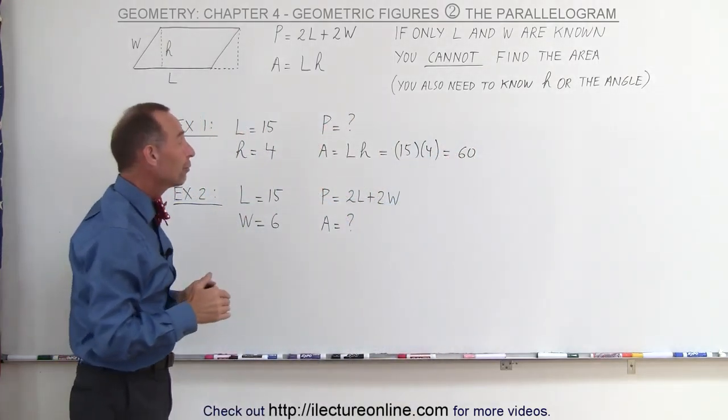So, in this case where the length of the long side and the length of the short side are given, you can find the perimeter but not the area. In the first example, where the length of the long side and the height were given, you can find the area but not the perimeter. And that's how we deal with parallelograms.